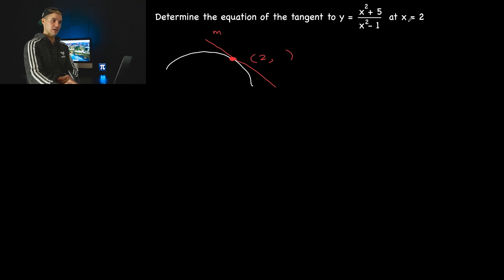Notice that we're only given an x value of 2. So if we wanted to find the corresponding y value, we could plug in that value of 2 into the function. So that would be 2 squared plus 5, which would be 9 over 2 squared minus 1, which would be 4 minus 1, which would be 3. 9 divided by 3 is 3. So the full coordinate is 2 and 3. Let's write it on the side here.